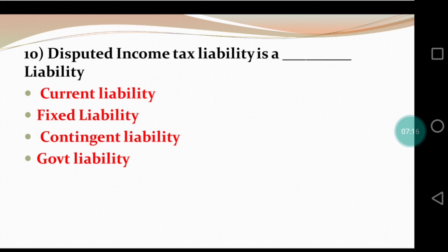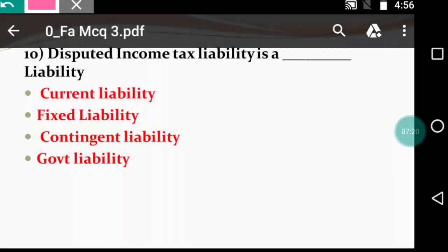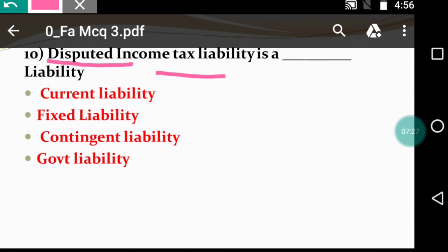Question 10: Disputed income tax liability is a — dash — liability. The options are: current liability, fixed liability, contingent liability, and government liability. A disputed income tax liability means there is an ongoing dispute between the income tax authority and us — such a liability may or may not arise. Since it depends on the happening or non-happening of an event, it is called a contingent liability. So the right answer is contingent liability.